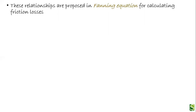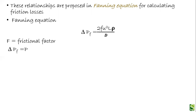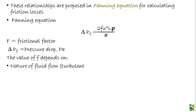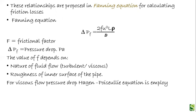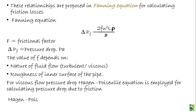The Fanning equation is used to calculate friction losses. It is written as: delta P_f equals 2f × mu squared × l × rho divided by d. Here f is the friction factor and delta P_f is the pressure drop. The value of f depends on the nature of fluid flow — whether turbulent or viscous — and on the roughness of the inner surface of the pipe. For viscous flow, the pressure drop is given by the Hagen-Poiseuille equation: delta P equals 32 × l × n × viscosity divided by d squared.